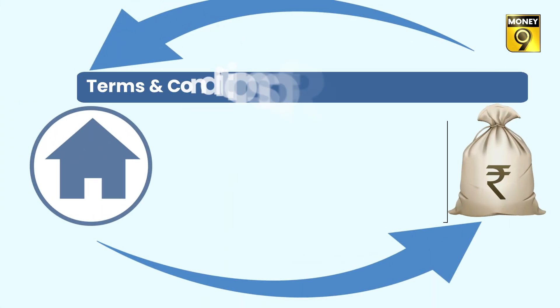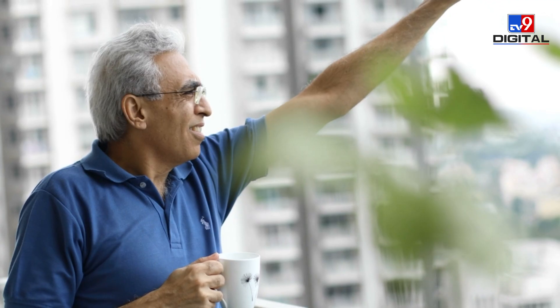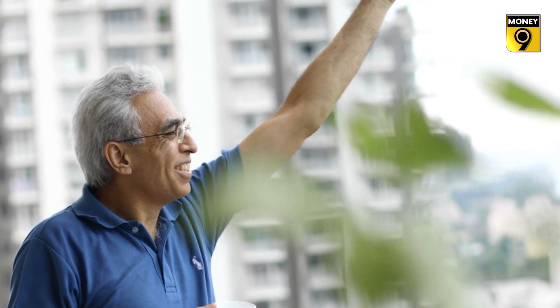The benefits of the reverse mortgage scheme are available to Indian citizens aged 60 years or older. If the husband and wife are taking the loan together, the spouse should have a minimum age of 55 years. In this way, one can spend their retirement life in their own home without depending on anyone for money.